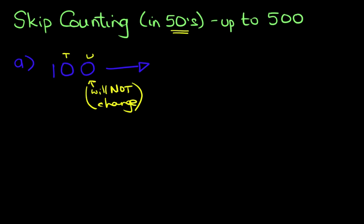The tens, however, will go up by 5. We're counting in 50s, they will go up by 5. Now if you add this together, this becomes 5. In this scenario, the 100 does not change. So the answer becomes the 100, the 0 goes to 5, and the unit remains the same. So therefore, the number after 100, if we are counting in 50s, is 150.